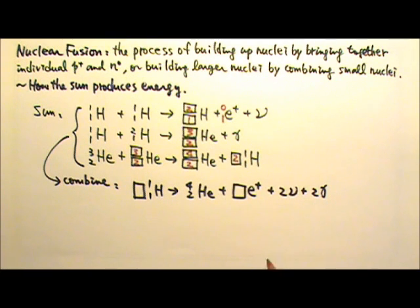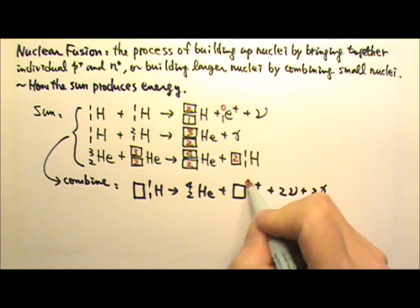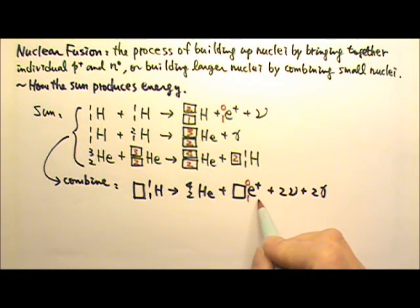To help us balance the equation, we can put in 0, 1 for the positron. So up here we would have something times 1 equals 4 plus whatever times 0. That means this number here has to be 4.